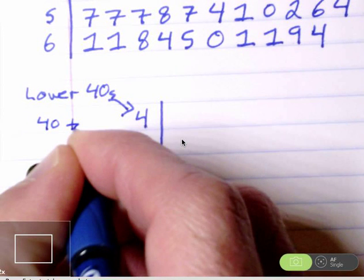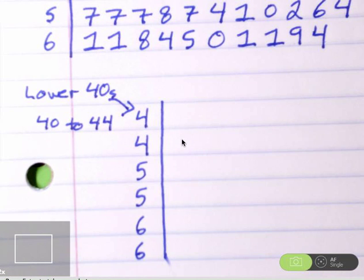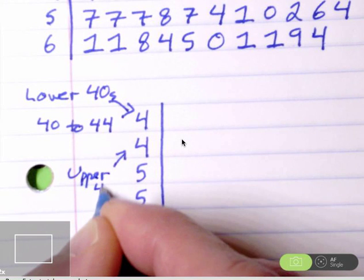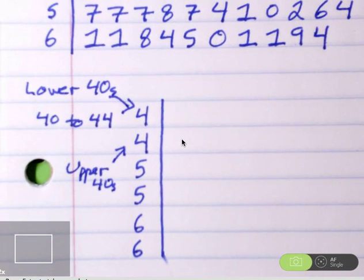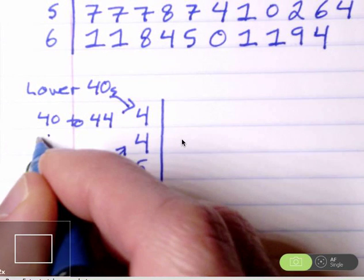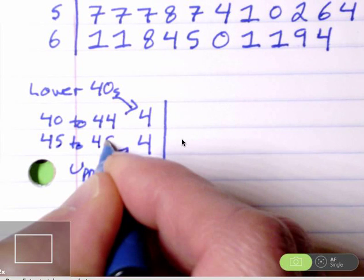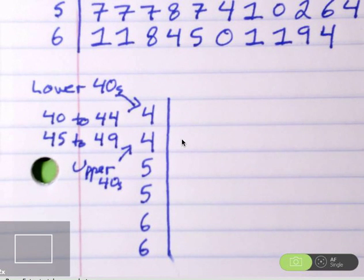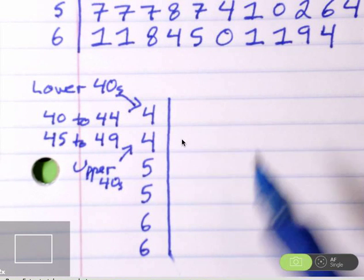In the upper 40s, then, we also have five ages: 45, 46, 47, 48, and 49. So we're going to have 45 to 49. It's important when you split the stems, that's what this is called, splitting stems, that each stem has the same number of possible leaves. So here, the leaves will be 0 through 4, there are five possibilities. Here, the leaves will be 5 through 9. Again, there are five possibilities.